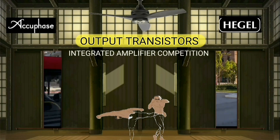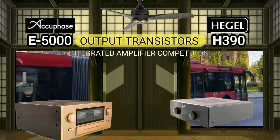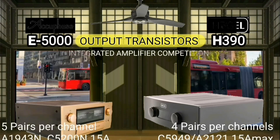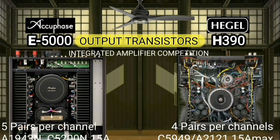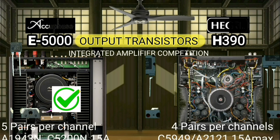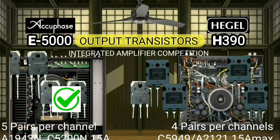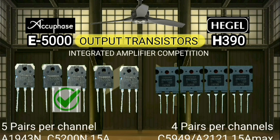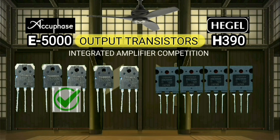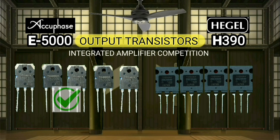The output transistor is the final component in the power amplifier. AQPACE has five pairs of output transistors per channel, while Hegel has four pairs of output transistors per channel.